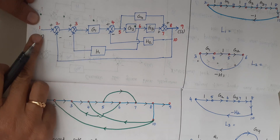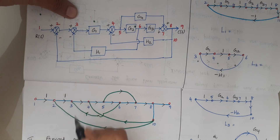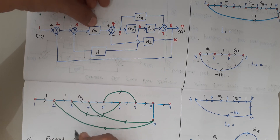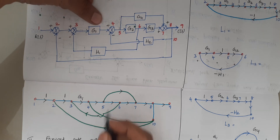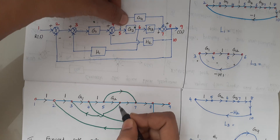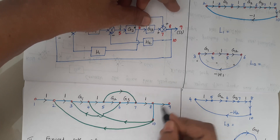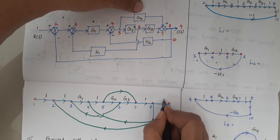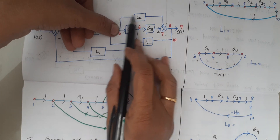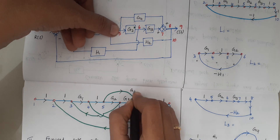Between nodes 1 and 2 there is nothing, so write it as 1. Between 2 and 3 also nothing, write it as 1. Between 3 to 4 there is G1. Between 4 to 5 there is nothing, so 1. Between 5 to 6 there is G2. Between 6 to 7 it is G3. Between 7 to 8 it is 1, and from 8 to 9 also 1. From node 5 to node 7 write it as G4.